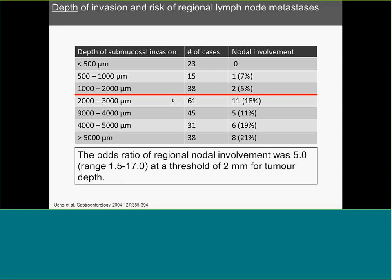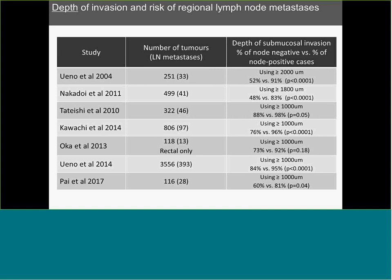Starting with depth of invasion and risk of regional lymph node metastasis. The largest study was Morino's 2004 study, which assessed depth of submucosal invasion and follow-up nodal involvement, arriving at a threshold of 2 mm for tumor depth. Over time, with many follow-up studies mostly from Japan but including recent North American studies, the depth threshold has been revised. More and more studies are moving toward 1 mm of tumor depth of invasion, as 2 mm may have been too liberal. This table shows the number of node-negative versus node-positive cases based on the depth of submucosal invasion.